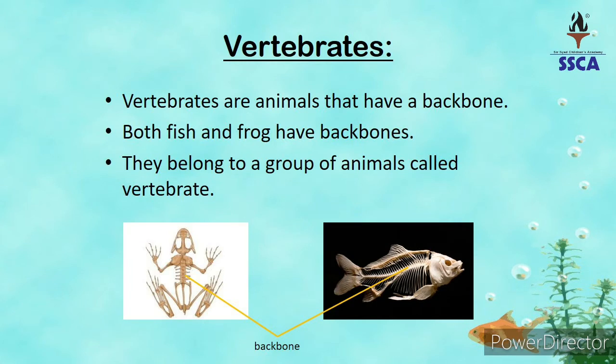Vertebrates — woh animals hain jinke paas backbone hai. Backbone kya hoti hai? Agar aap apni back pit touch karein, toh aapko ek bone feel hogi. Yeh bone kya hai? Backbone hai — rear ki haddi. So, woh animals jinke paas yeh backbone hoti hai, woh vertebrates hain.